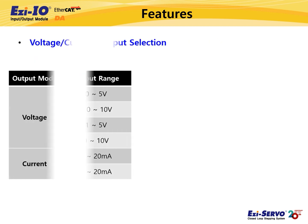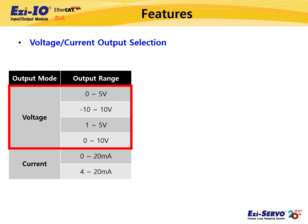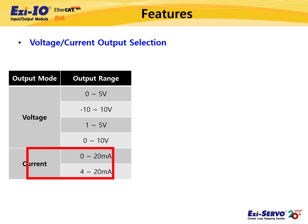Easy IO EtherCAT-DA also supports various voltage or current output modes — six output modes in total. For voltage output mode, there are four settings: 0 to 5 volts, minus 10 to 10 volts, 1 to 5 volts, and 0 to 10 volts. For current output mode, the output ranges are 0 to 20 milliamperes and 4 to 20 milliamperes.